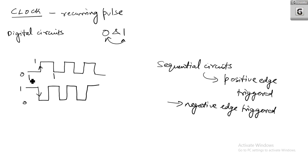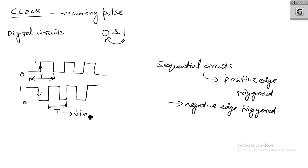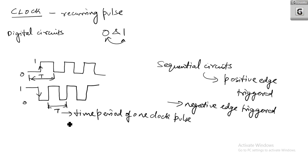One cycle is for 0 and 1 to complete — you get one cycle. The time period T is the time period of one clock pulse. The clock frequency is given by frequency equals 1 divided by T.